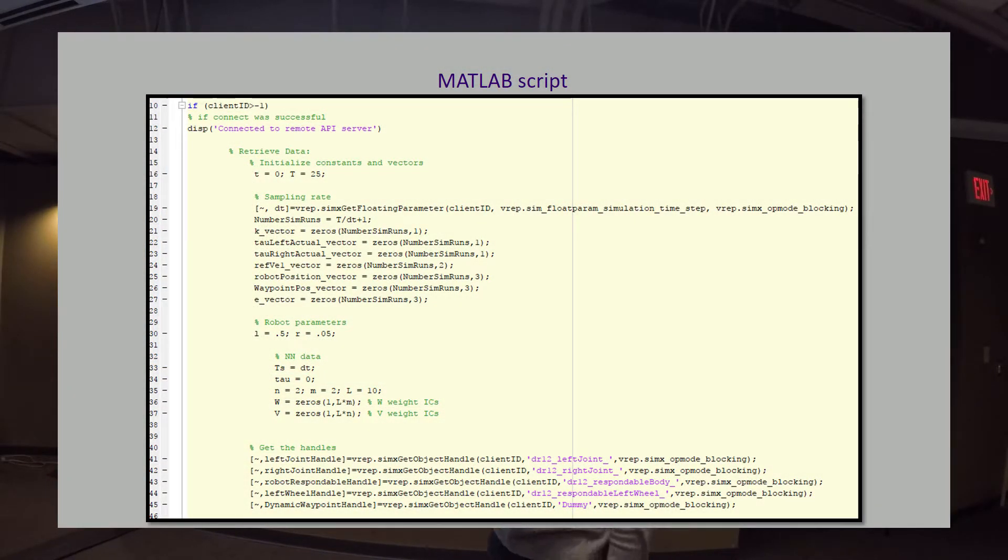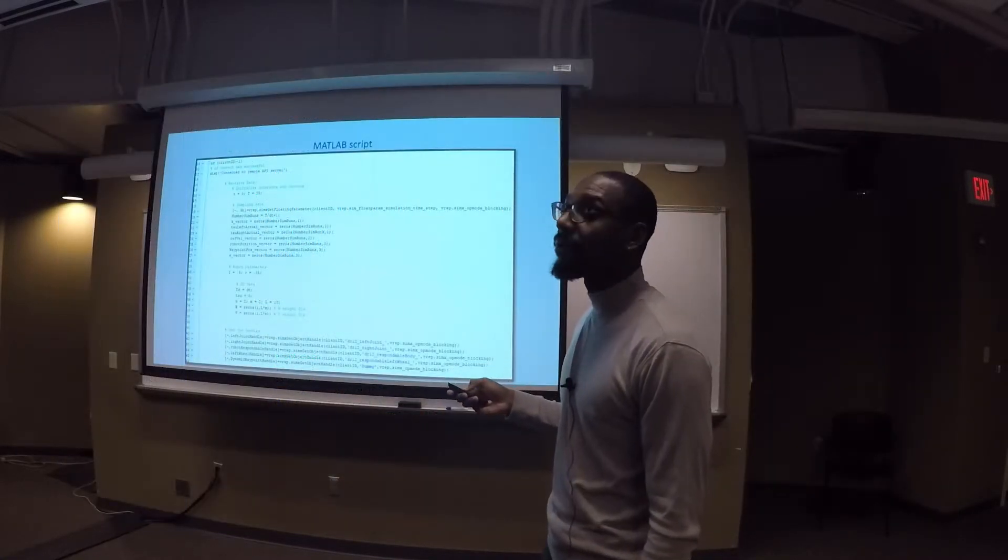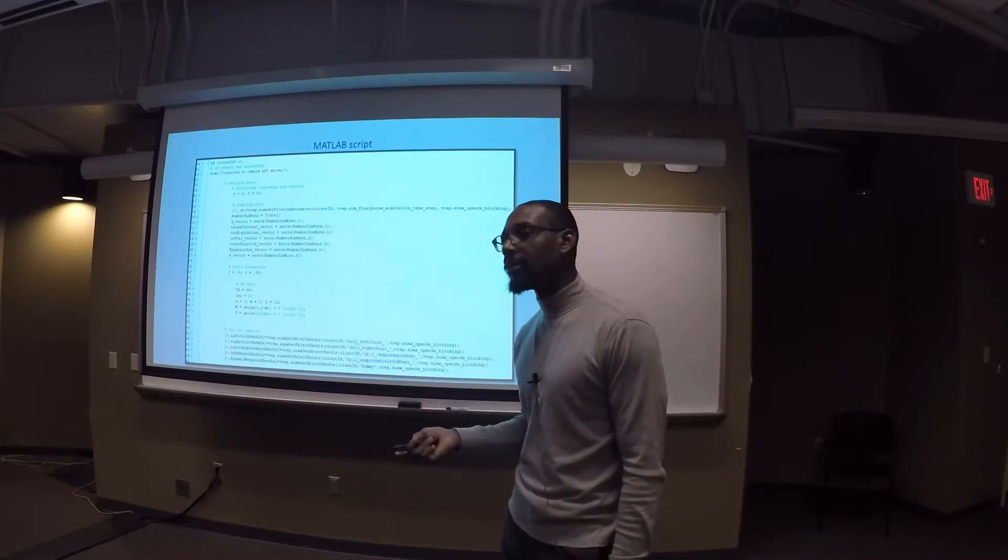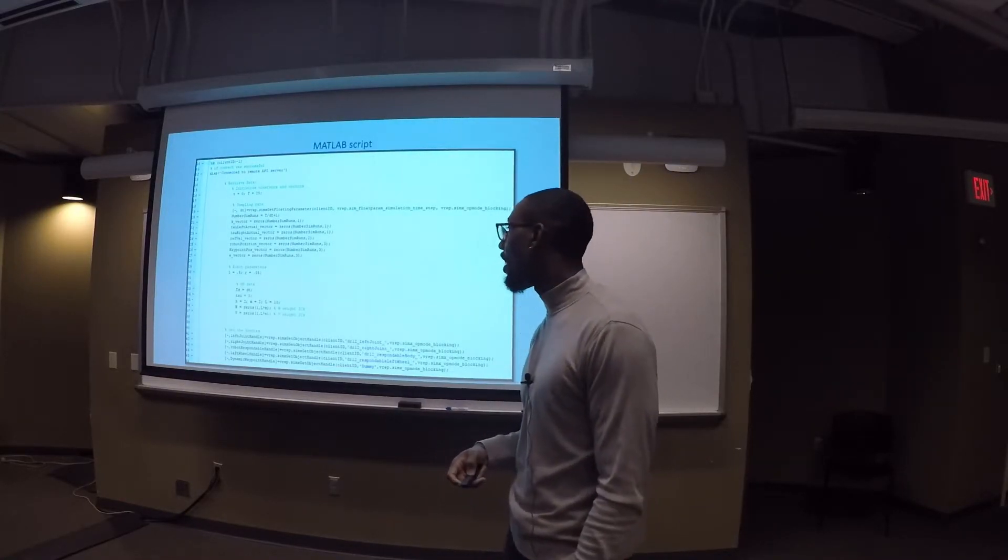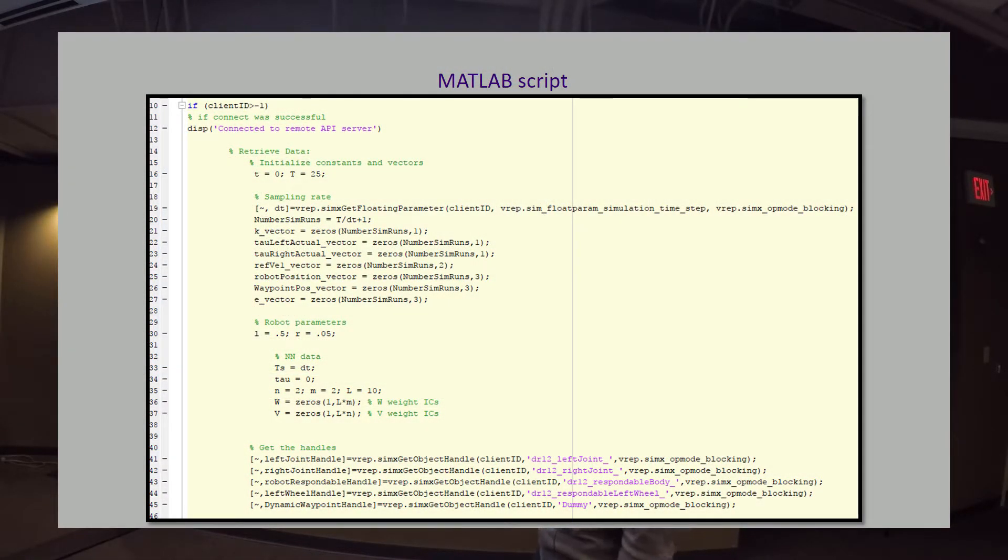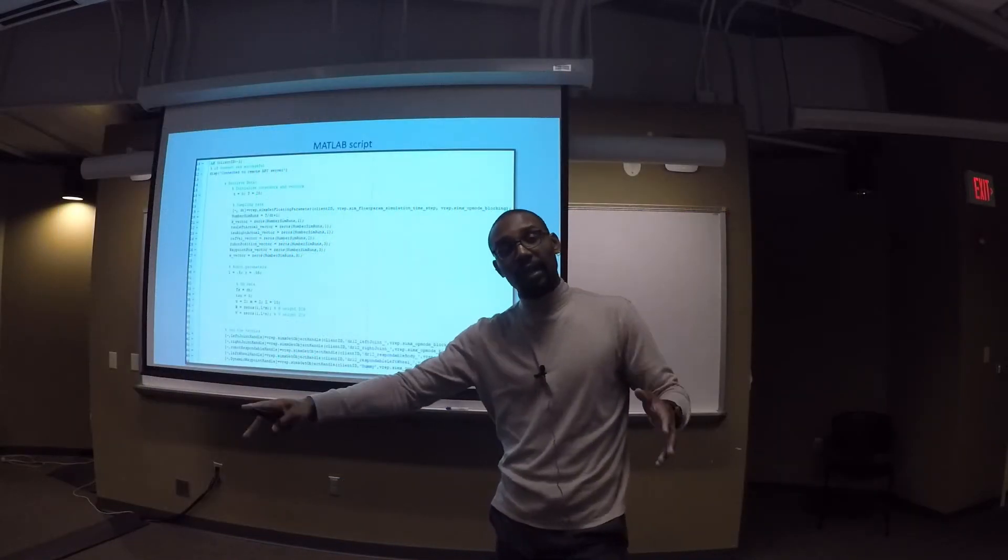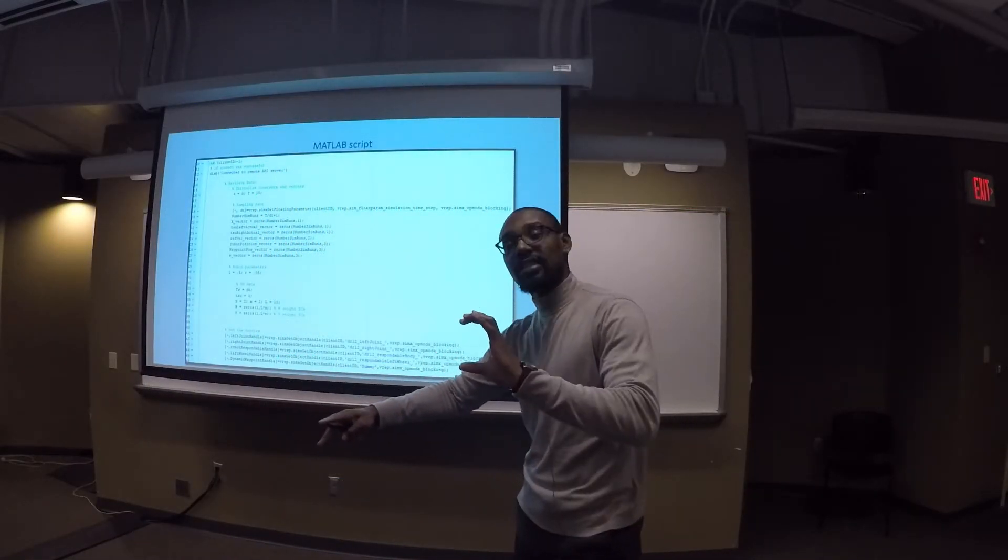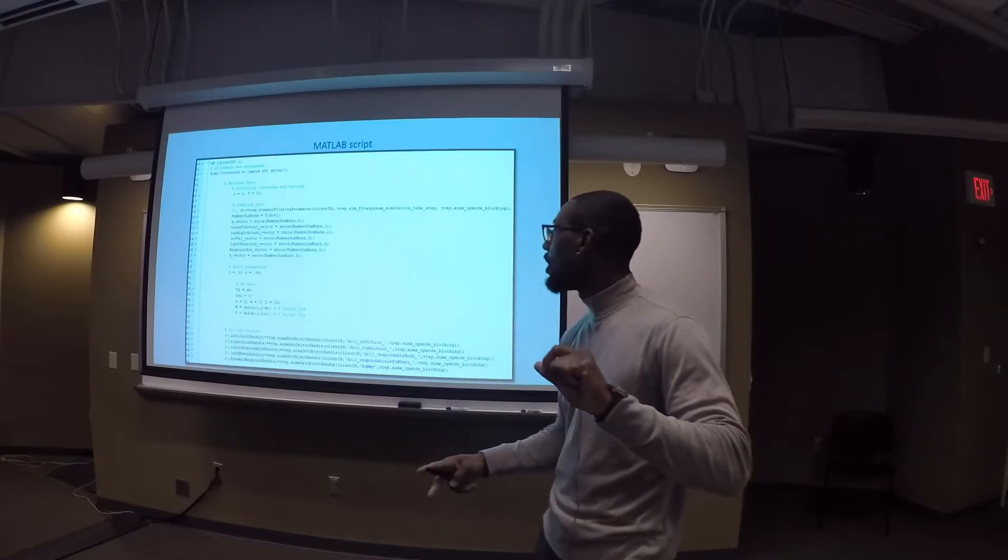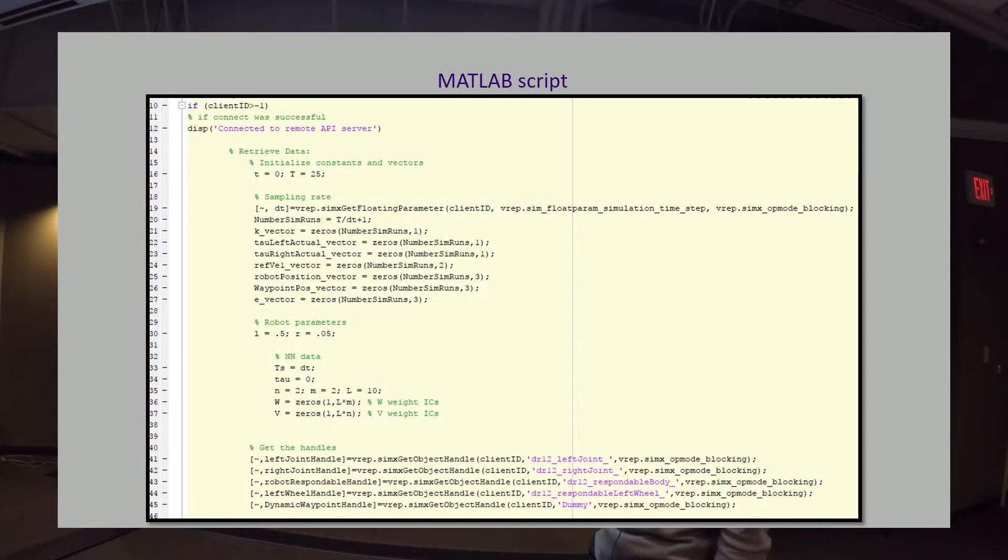Here's the actual meat and potatoes of the MATLAB script. We're going to run a simulation for 25 seconds. We start by getting the sampling rate time from VREP. It has a built-in sample rate time of 0.05 seconds. We pull that sample rate time in so that we can use it in our code. We initialize some vectors to store our data. Relevant robot parameters are defined, for example, the length of the robot and the size of the wheel radius in meters.